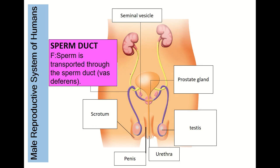The next part is the sperm duct — there are two sperm ducts. Its function is to transport sperm. It is also known as the vas deferens.